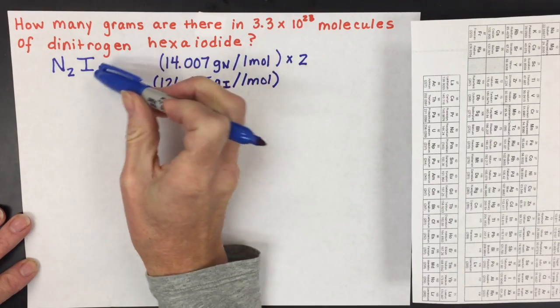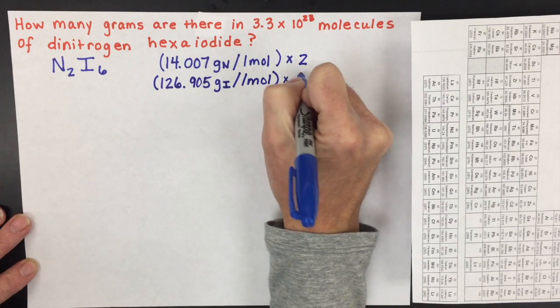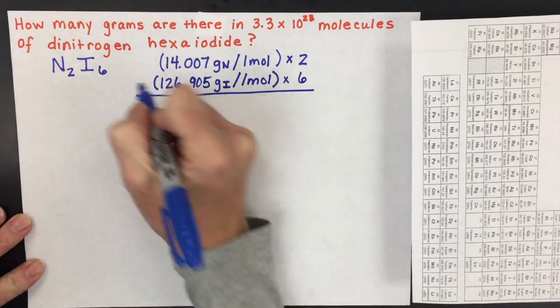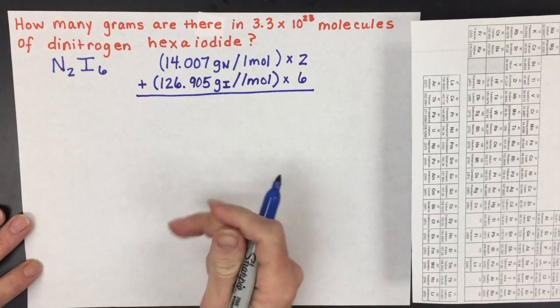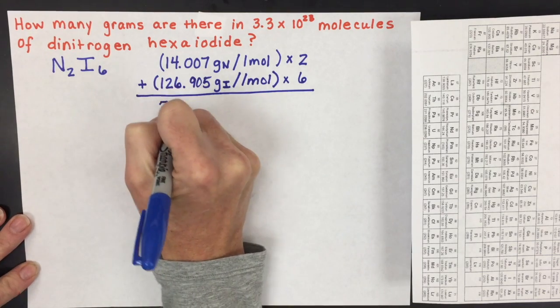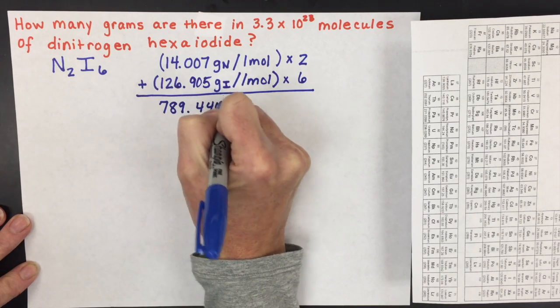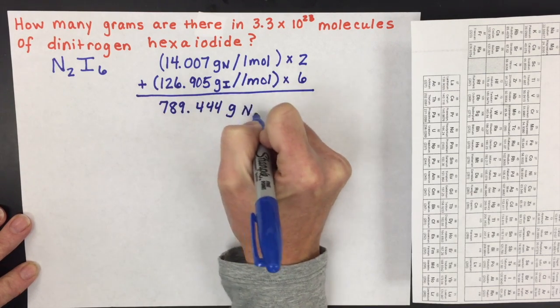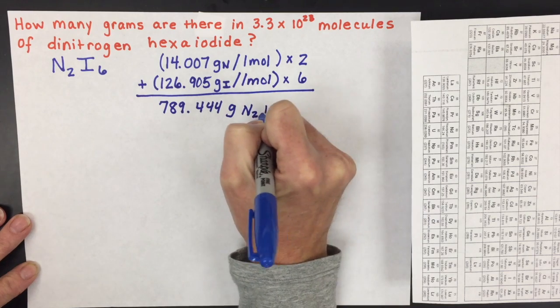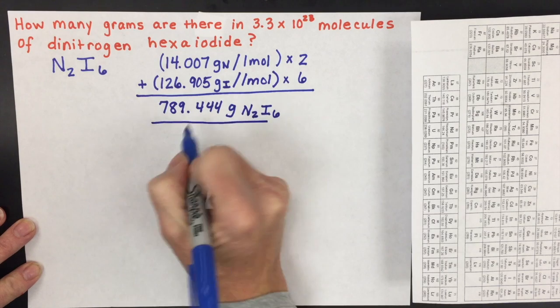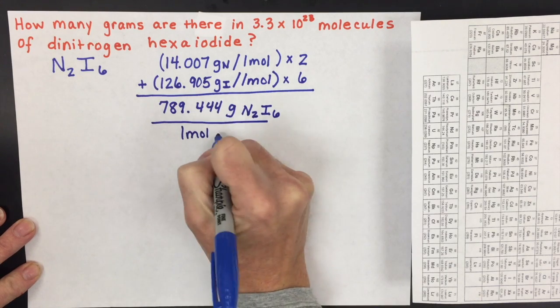And we have 6 of those atoms in this covalent compound. So when you multiply those and then add them together, the total is 789.444 grams of this dinitrogen hexaiodide covalent compound for every 1 mole of that compound.